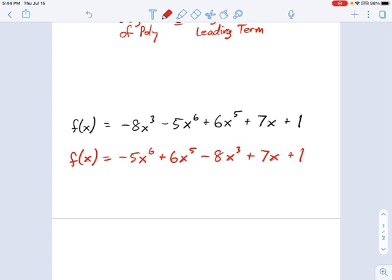6, 5, 3, 1, 0. And it is okay that some terms are missing. Like, where's the x squared term? There is no x squared term. Or you could think about it as there is an x squared term, but the coefficient is 0, right? It's 0x squared. Either way you want to think about it is fine.